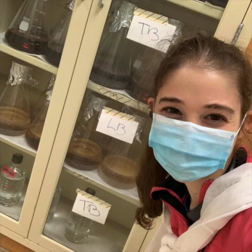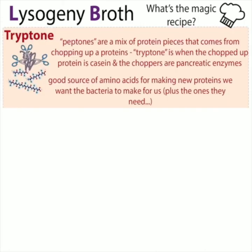You also see LB in big flasks, which we use when we do protein expression, and we have cabinets full of media for whenever we want to use it. So what's in LB — what's the magic recipe? One of the main things is tryptones. Tryptones are a mix of protein pieces that come from chopping up proteins. Tryptone is the specific name for peptones from chopping up casein, the common protein in milk, using pancreatic enzymes. So tryptone is a mix of peptides — little protein pieces — that provide the amino acids the bacteria can use to make new proteins.